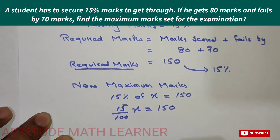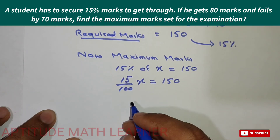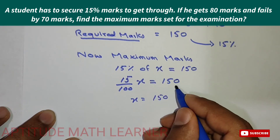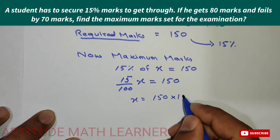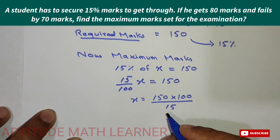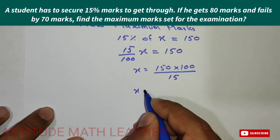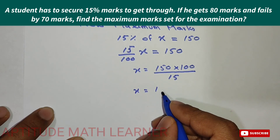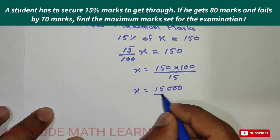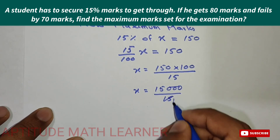After simplification, x equals 150 multiplied by 100 divided by 15. This gives us 15000 divided by 15. Dividing 15000 by 15, we get x equal to 1000.